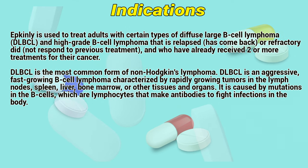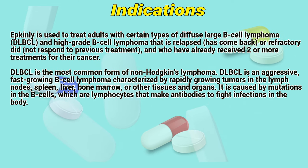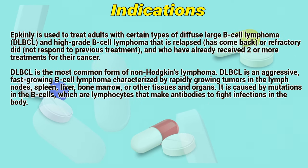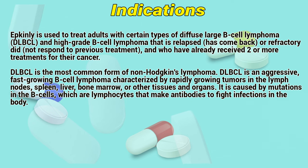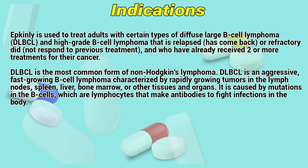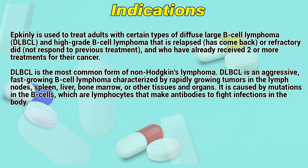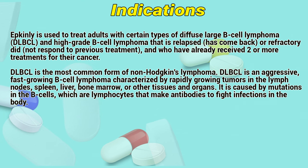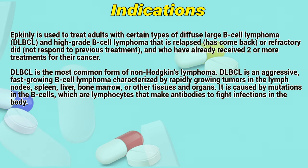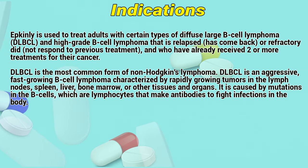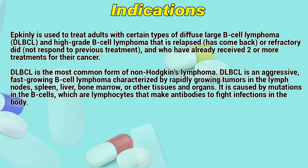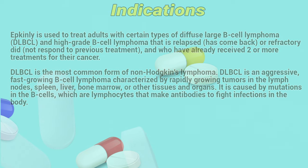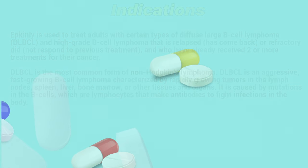DLBCL is the most common form of non-Hodgkin's lymphoma. DLBCL is an aggressive, fast-growing B-cell lymphoma characterized by rapidly growing tumors in the lymph nodes, spleen, liver, bone marrow, or other tissues and organs. It is caused by mutations in the B-cells, which are lymphocytes that make antibodies to fight infections in the body.